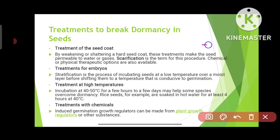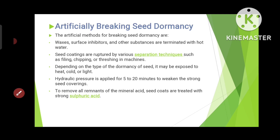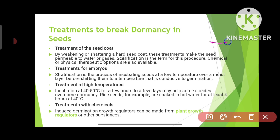Next are treatments to break seed dormancy. The first is treatment of the seed coat. By weakening or shattering a hard seed coat, these treatments make the seed permeable to water or gases. Scarification is the term for this procedure. Chemical or physical therapeutic options are also available — exposing the hard seed coat to cold, heat, or light makes it permeable to water or other gases, which breaks dormancy and leads to germination.